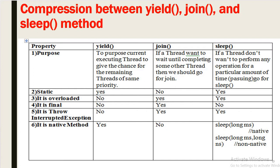Now the comparison between yield, join, and sleep methods. Purpose: yield pauses the current executing thread to give chance to remaining threads of same priority; join is used when a thread wants to wait until another thread completes; sleep is used when a thread does not want to perform any operation for a particular time. Static: yield is static, sleep is also static, but join is not static. Overloaded: yield is not overloaded with only a single signature, but join and sleep are overloaded methods with different signatures.